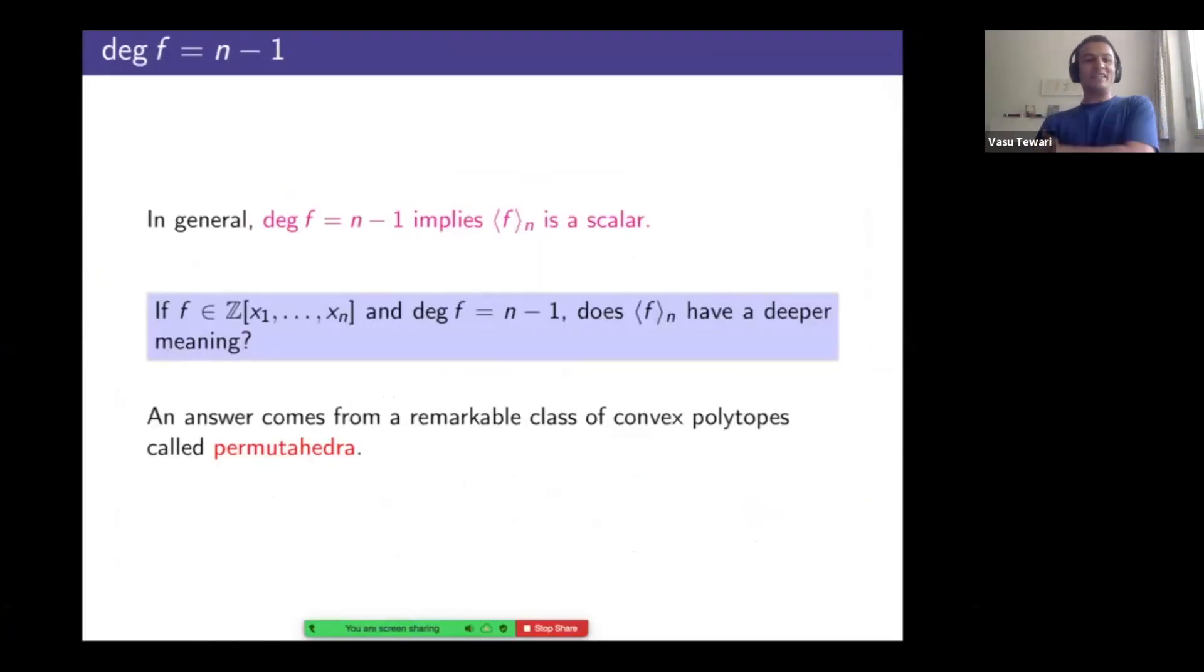So facts two and three combine to already give you a simple vanishing result that says divided symmetrization vanishes on the degree n minus one homogeneous piece of the ideal generated by positive degree symmetric polynomials. So degree n minus one piece of the coinvariant or the invariant ideal, divided symmetrization vanishes on it. So if the degree is n minus one then the divided symmetrization is a scalar. So the first time divided symmetrization actually becomes interesting is when the degree's n minus one and then you've got the philosophical question: had I given you an integer value or integer coefficient polynomial degree n minus one and you perform divided symmetrization you get an integer and does this integer have a deeper meaning?